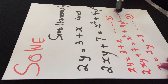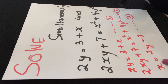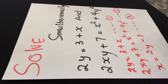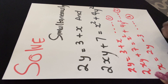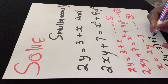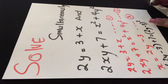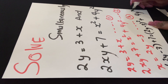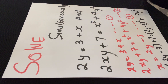Now that I have my three equations, the next step is to apply the method of substitution — substituting equation 3 into equation 2. Wherever you see x in the second equation, you substitute it with (2y − 3). Then I have 2y(2y − 3) + 7 = (2y − 3)² + 4y². Now that I have everything written in terms of y, I can solve for y.